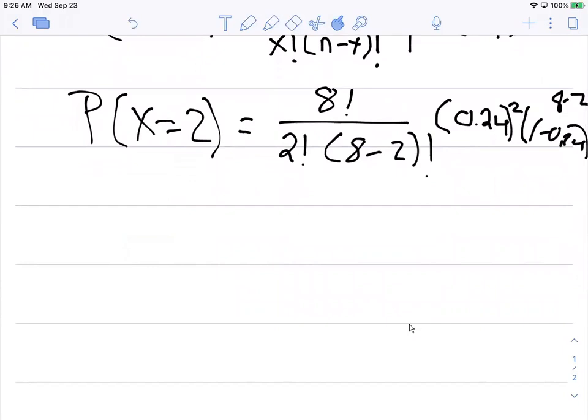We can plug in these numbers. Eight factorial is 40,320, divided by 1440. We'll do two factorial and multiply that by six factorial.